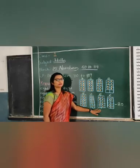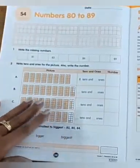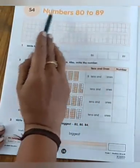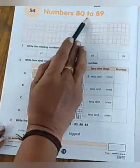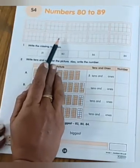Now open your workbook, page number 38. Write the date. S4, numbers 82 to 89. We have to write numbers 1 to 89.